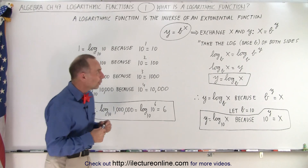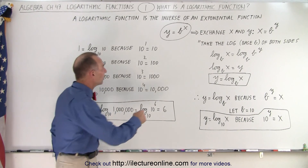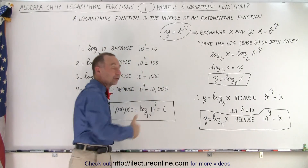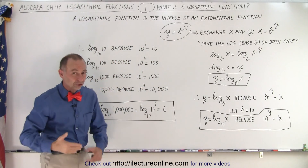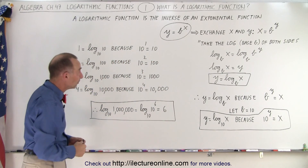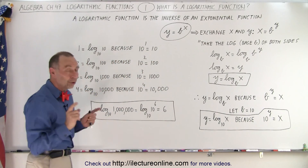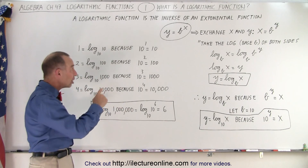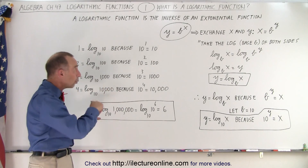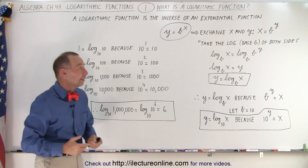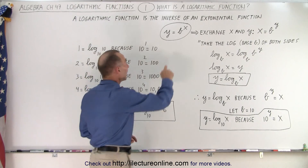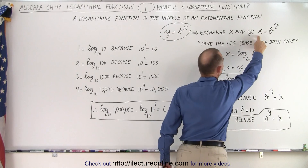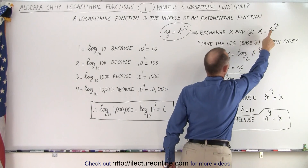How do we see that? Well, the following. Here we can see that y equals b to the x is the typical exponential function, just like what we saw in the previous series. Now, what we can do is take the inverse of that function by exchanging x and y, and then solving for y again. So the y becomes an x, the x becomes a y, so we write it like x equals b to the y.